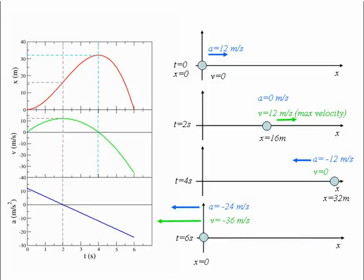At t equals six seconds, the particle passes through the origin. Notice that the displacement is zero but the distance travelled equals 64 metres. For t greater than six seconds, x, v and a will all be negative. The particle keeps moving in the negative direction faster and faster.